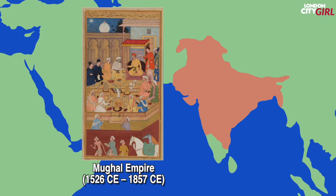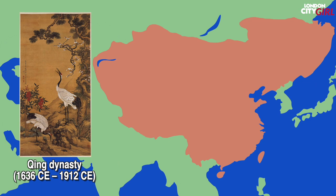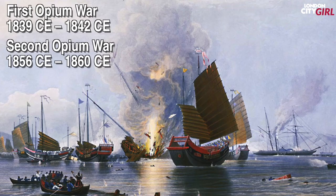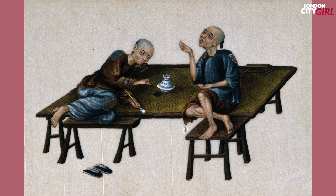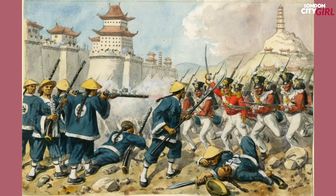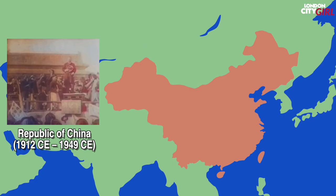Modern times. Around the 17th century Mughal India became the world's largest economic power accounting for 24.4 percent of world GDP. The Qing dynasty which was to be the last Chinese imperial dynasty was established in 1636 CE. The Qing dynasty would fight with western powers in the opium wars because western traders would sell the highly addictive drug to the Chinese population. The west was easily able to defeat the Qing dynasty with their modern warfare technology and upon victory they forced the Qing government to not only grant favourable tariffs and trade conditions but also to hand over territory. In 1912 CE the Qing dynasty was replaced by the Republic of China.